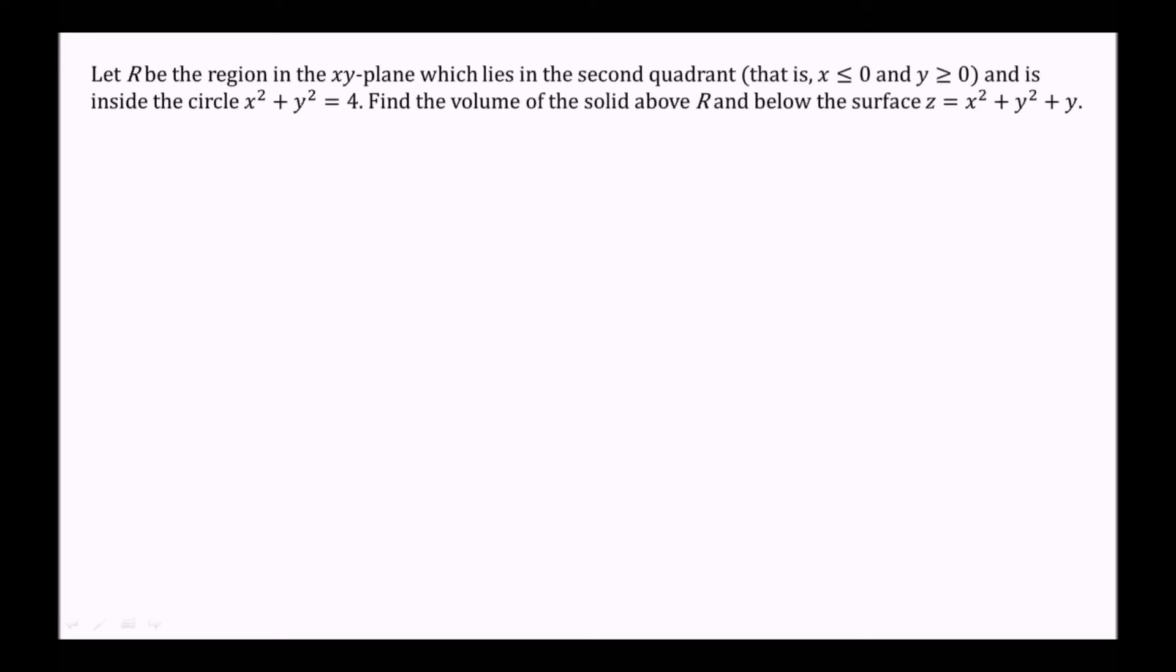So what we'll want to do first is draw the region in two dimensions over which we're integrating. The region r is equal to x is less than or equal to 0, y is greater than or equal to 0. In our two-dimensional plane, we know that that is the second quadrant we're dealing with. We also have another constraint, that is x squared plus y squared equals 4, that is also part of the region r.